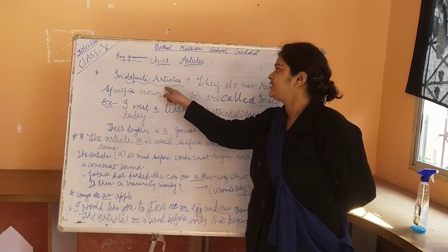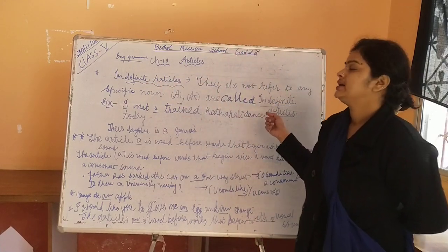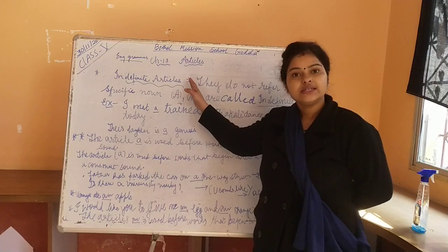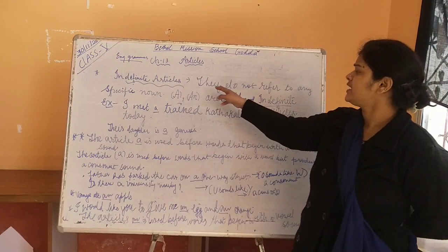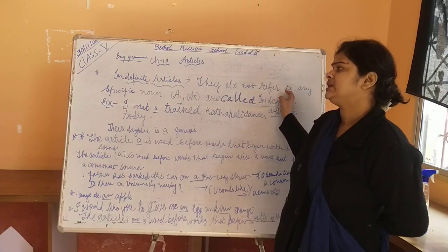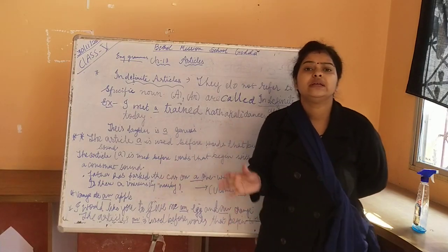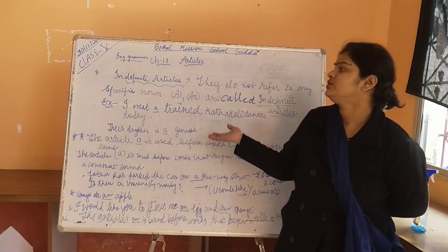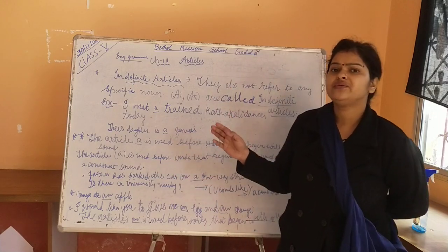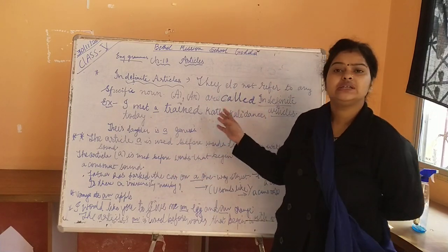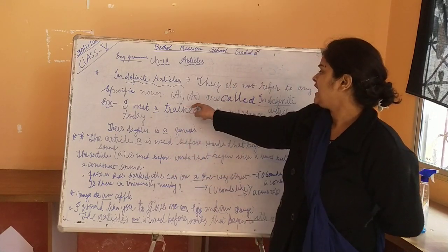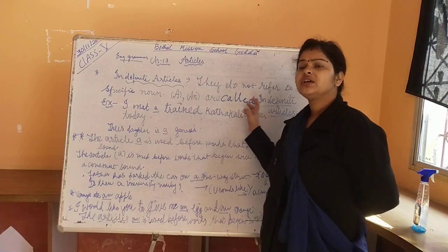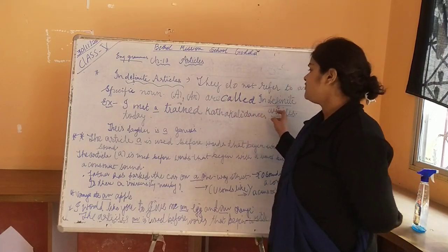I will explain you the indefinite articles which is given in your grammar book. Let's define what indefinite articles are. Indefinite articles do not refer to any specific noun. Definite articles refer to a specific noun, but indefinite articles do not. A and AN are called indefinite articles.